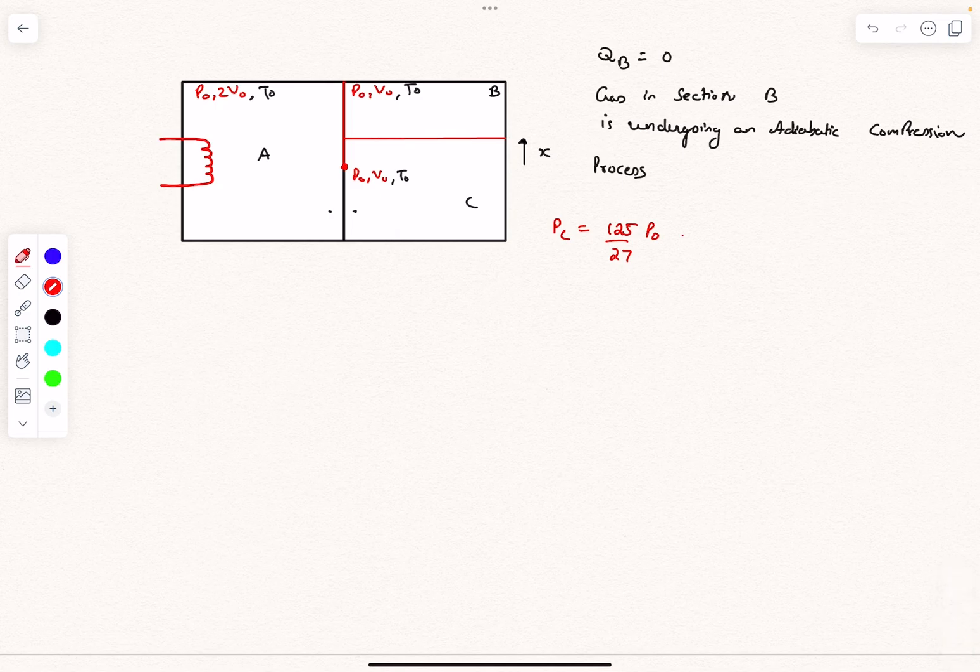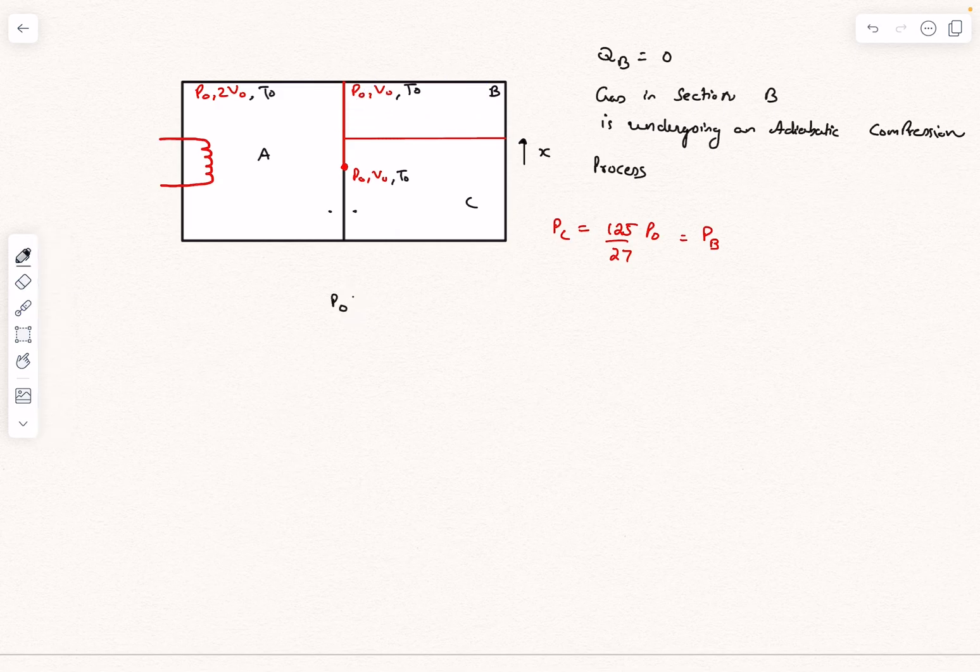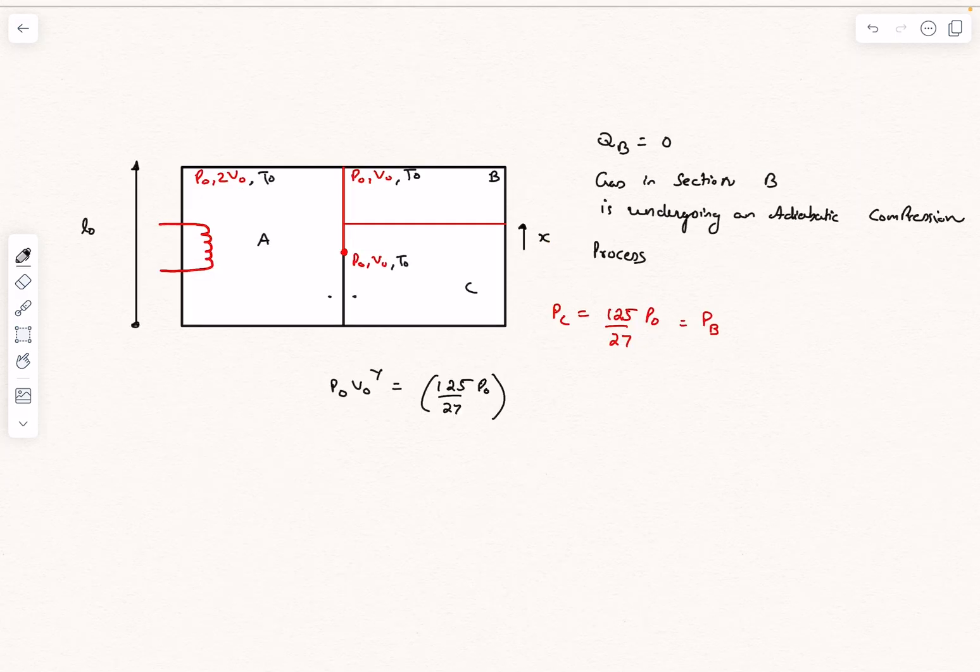In the final case, this should also be equal to the pressure of gas in section B. Now let's use the equation for the adiabatic process. For section B, P₀V₀^γ equals the final pressure, which is PC, and the final volume of section B is VB^γ.